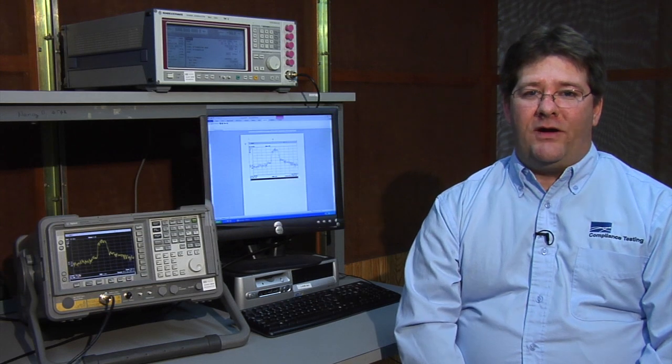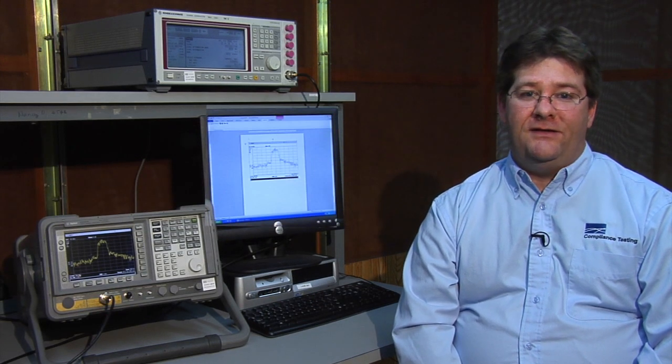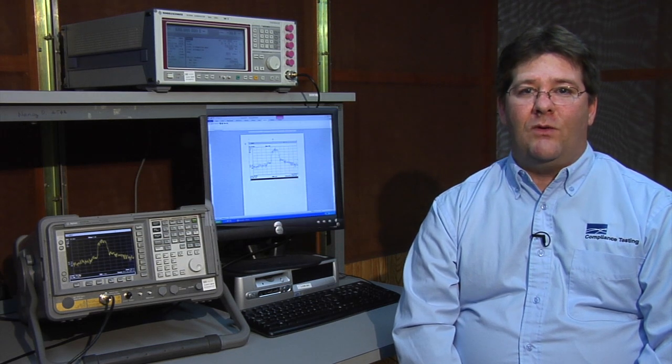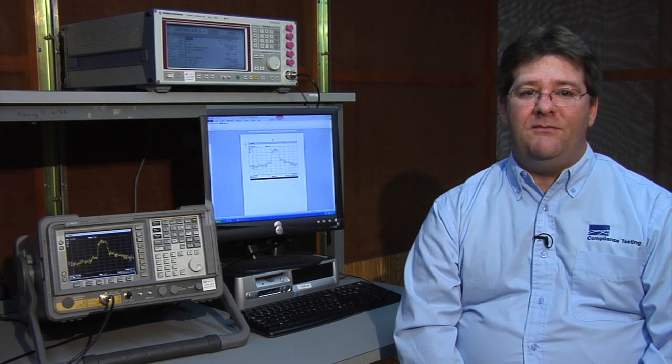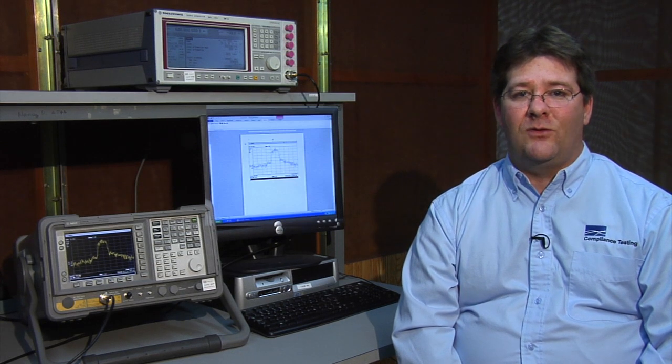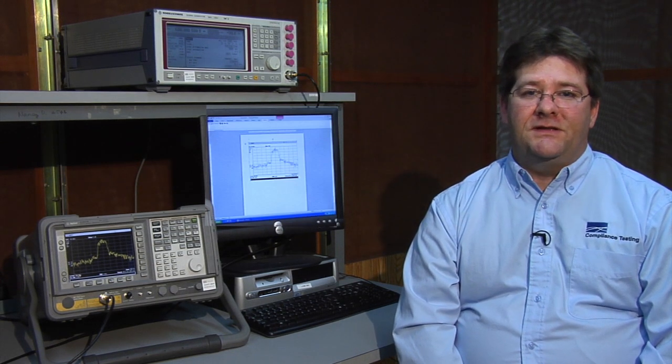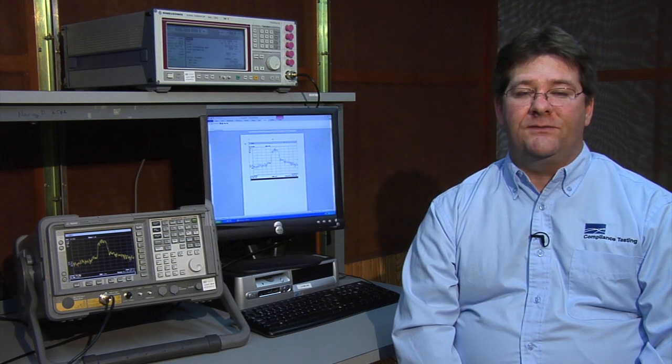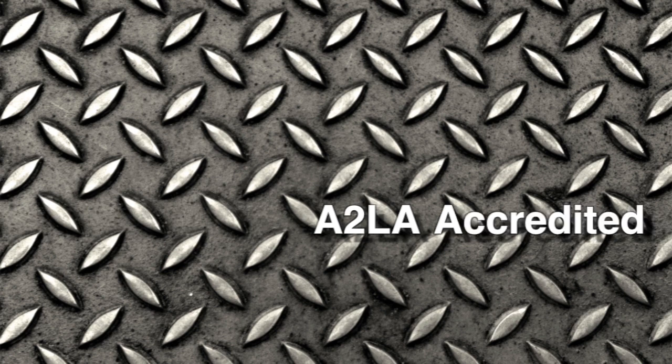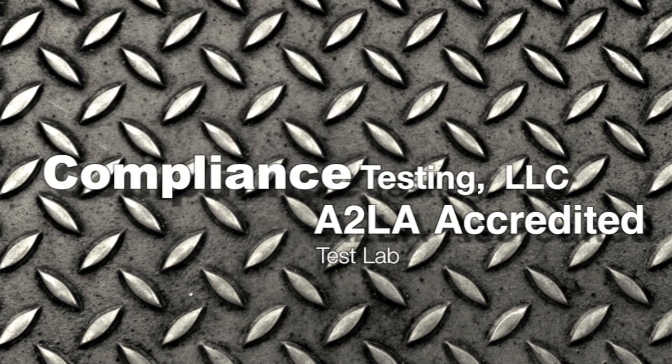Not all products require certification. Products which do not contain transmitters but do contain digital circuitry are required to meet the FCC Part 15B Unintentional Radiator rules which are subject to Declaration of Conformity. This ensures that these products do not cause interference with other products generally found in the home. These tests can only be performed by an accredited laboratory. Compliance Testing is an A2LA accredited laboratory capable of performing these tests for you.